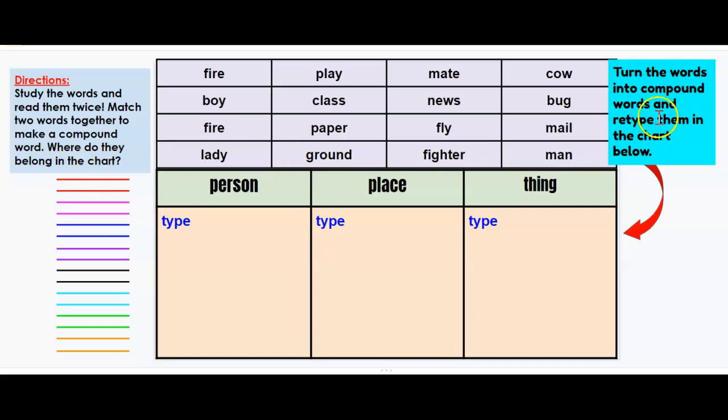Turn the words into compound words and retype them in the chart below. Boys and girls, once you make a compound word by matching two words, you're going to use these color lines to help you find the match so that you know you've already used the word. For example, fire